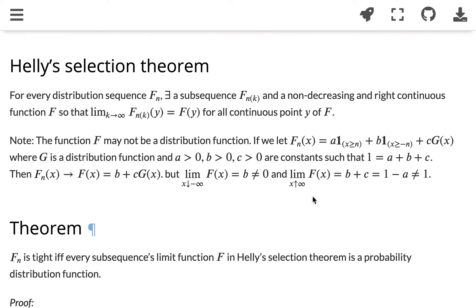So the next theorem we're going to talk about is Helly's Selection Theorem. What it tells us is that for any sequence of distribution function fn, the fn doesn't have to be converged to something itself. We can always find a subsequence fnk that will converge to a function f.